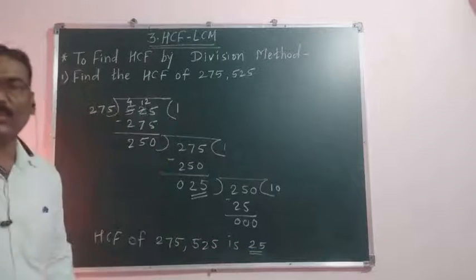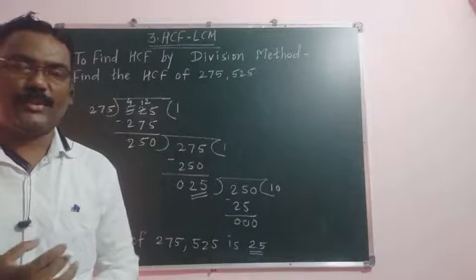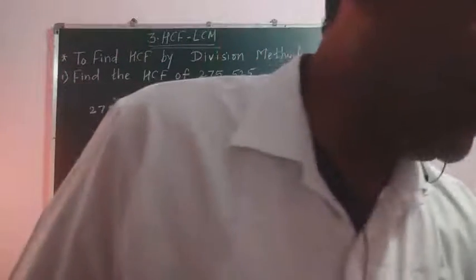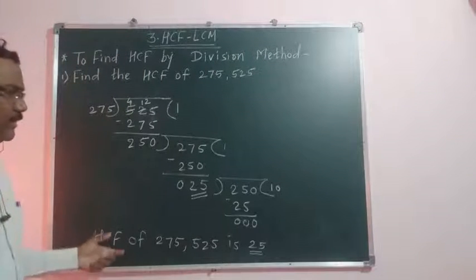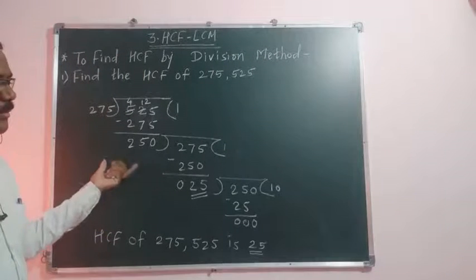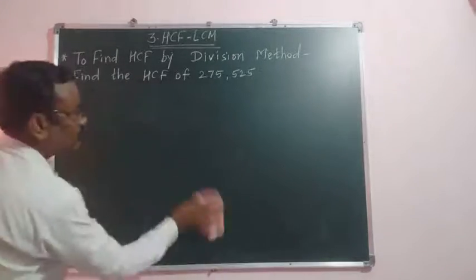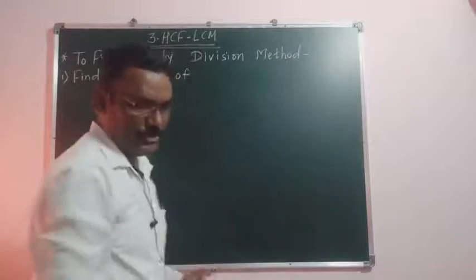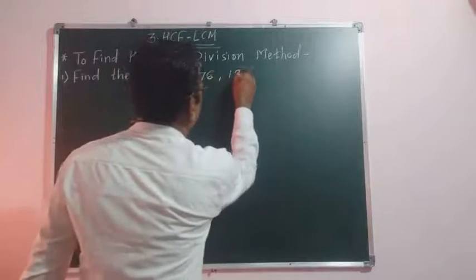So like this way, we can find the HCF by division method. Let us see one more example. The numbers we will change here. Suppose numbers are 76 and 133.